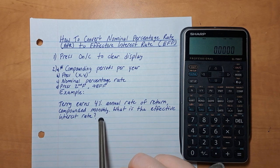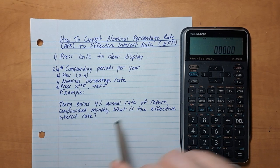So Terry earns 4% annual rate of return compounded monthly. What is the effective interest rate?